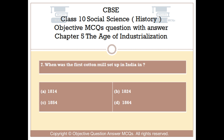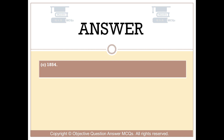Question number 7. When was the first cotton mill set up in India? Option A, 1814; Option B, 1824; Option C, 1854. The right answer is Option C: 1854.